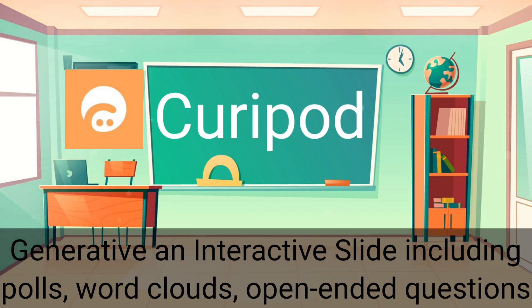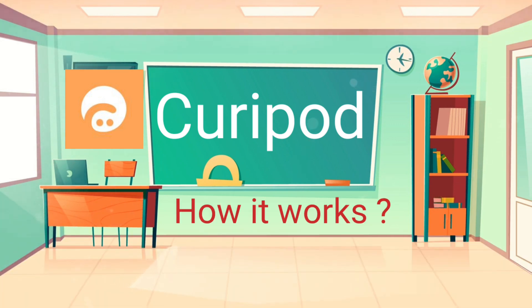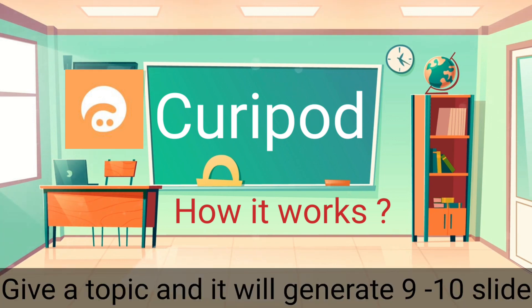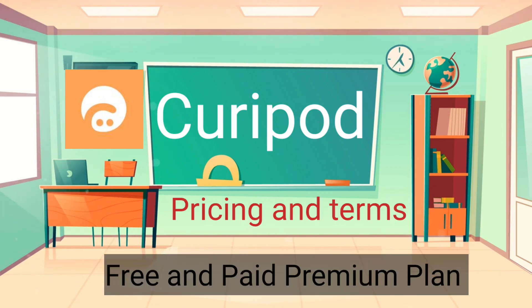Third on the list is Query Pod. Just give it a topic and it will generate an interactive slide deck for you in seconds, including polls, word clouds, open-ended questions, and a drawing tool. How it works: once you have a slide deck — which seems to generate 9 to 12 slides on your topic — you can edit and adjust to suit your needs, plus you can add more slides on your own.